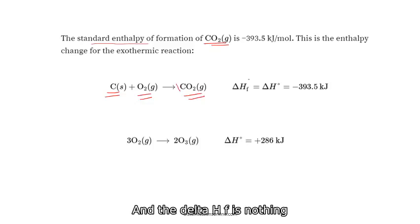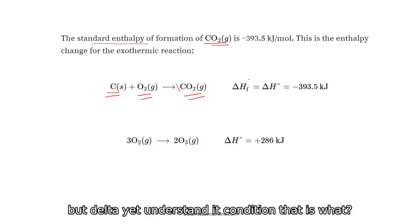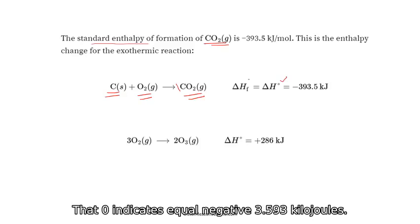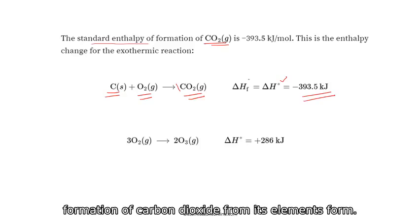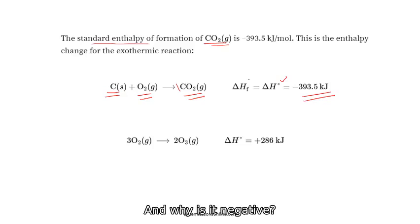And the delta H is nothing but delta H on the standard condition. That is what that zero indicates, equal negative 393.5 kilojoules. That is the standard enthalpy of formation of carbon dioxide from its element form. And why is it negative? It's because it is an exothermic process.